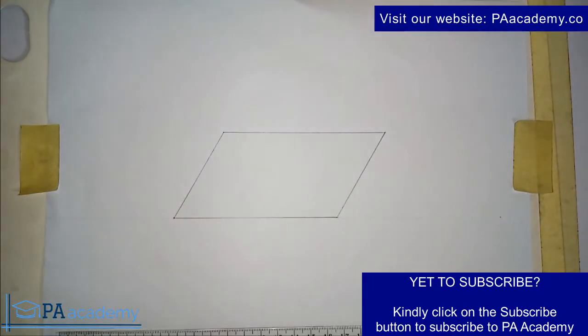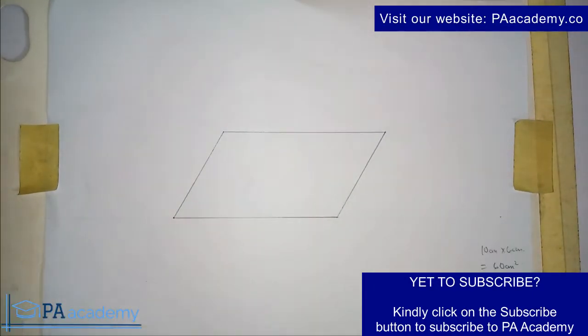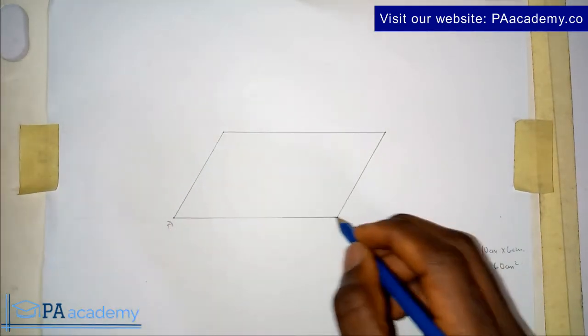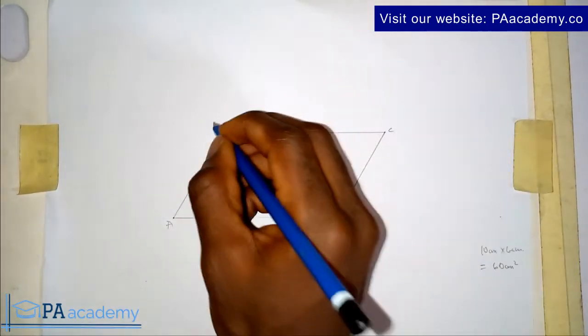So how do we go ahead to draw a triangle that will also be of this? To do this, let me call this part A, B, C, D.